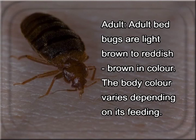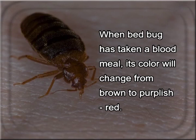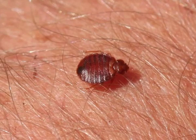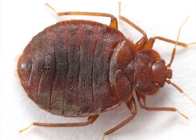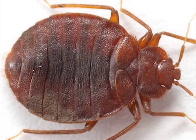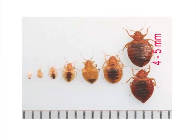Morphology of bed bugs — Adult: Adult bed bugs are light brown to reddish brown in color. The body color varies depending on feeding. When a bed bug has taken a blood meal, its color will change from brown to purplish red. They are flattened or oval in shape and have no hind wings. However, the front wings are vestigial and reduced to pad-like structures. Bed bugs have segmented abdomens with microscopic hairs that give them a banded appearance. Adults grow up to 4 to 5 millimeters long and 1.5 to 3 millimeters wide.